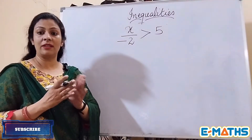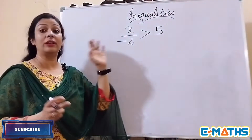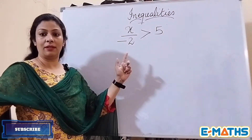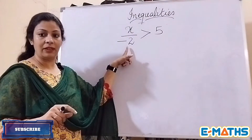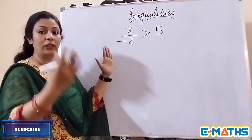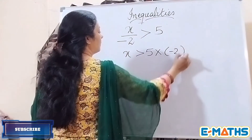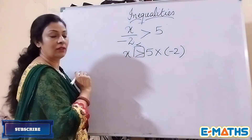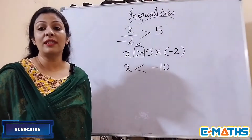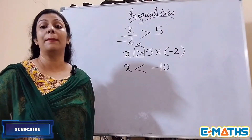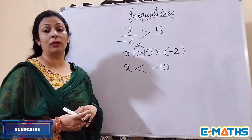Just remember these two things — the sign of inequality changes when you multiply or divide by a negative integer. This is the condition where students often get confused about when to change and when not to change. Since we are not getting a fixed value of x, we write a set for the solution.